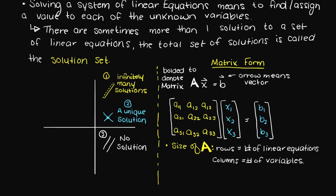In the matrix equation, our matrix A is multiplied by x, which is a column vector representing all of our unknowns, and this equals b, which is a constant vector — meaning it is just filled with some constant numbers such as 0, 10, 100, etc.